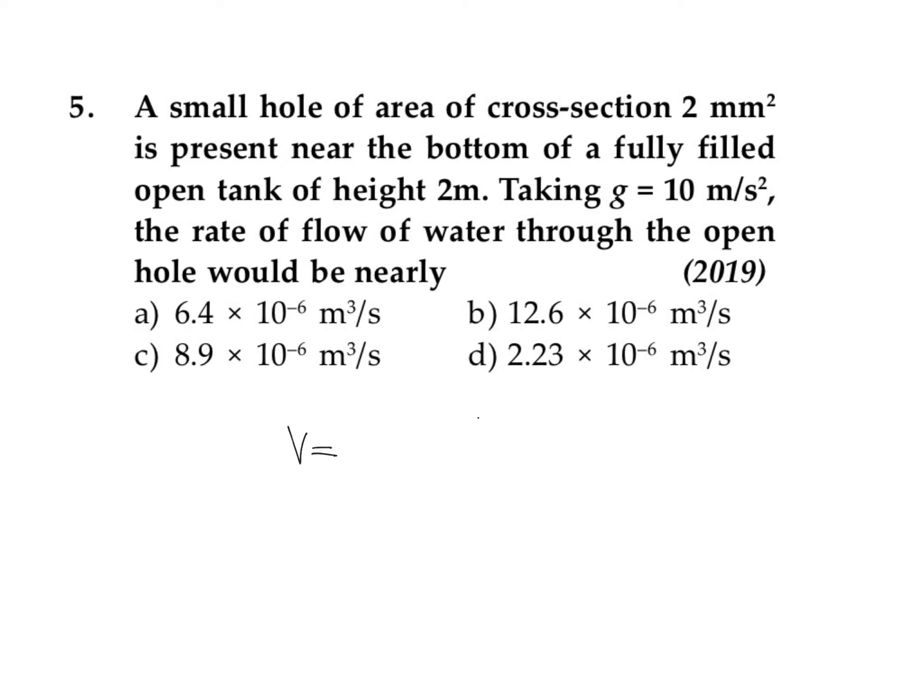First, we find the velocity with which liquid is coming out using the equation √(2gh), that is √(2 × g × h). We can take g as 10 and h is 2 meters. So this becomes 2√10, which is the value of the velocity of liquid coming out.